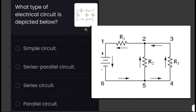What type of electrical circuit is depicted below? Looking at this figure, we have loads R1, R2, and R3. R1 is wired in series while R2 and R3 are wired in parallel. Therefore, the answer is a series-parallel circuit — a circuit that has some loads wired in series and some loads wired in parallel.